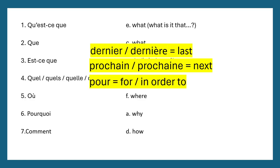Also: 'pour'. You might have seen 'pour' meaning 'for', but it also means 'in order to'. For example, 'pour manger un croissant, il faut acheter un croissant' — in order to eat a croissant, you have to buy a croissant. That's a ridiculous example, but there we go.